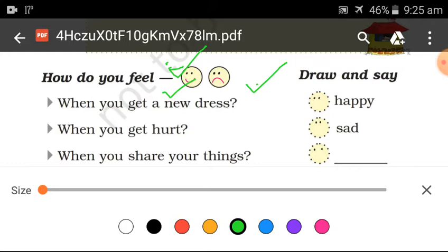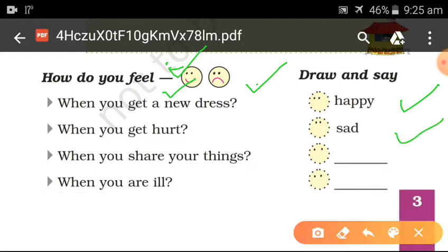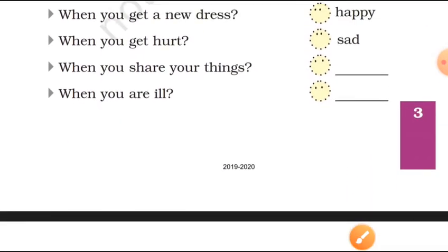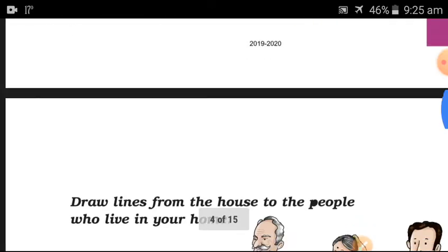So draw and say. You make a face here, happy and sad. So here you have two places. You make a face of happy and sad.